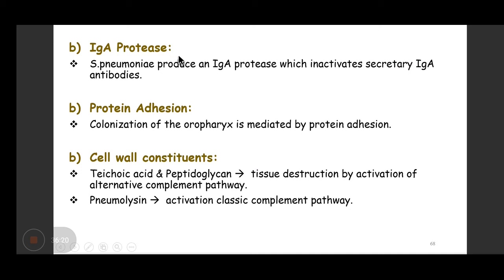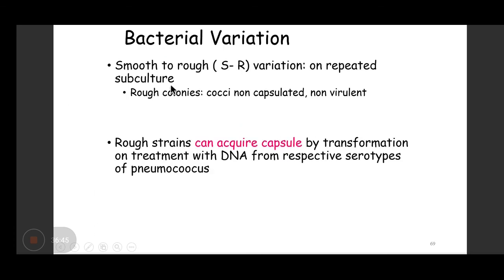Other virulence factors include IgA protease — an enzyme that cleaves IgA antibody, the predominant antibody in the respiratory tract. Protein adhesins mediate colonization. Cell wall constituents like teichoic acid and peptidoglycan also participate in virulence. Smooth-to-rough bacterial variation occurs when a pathogenic strain loses the genes producing capsular polysaccharide, converting from smooth (pathogenic) to rough (non-pathogenic) colonies.